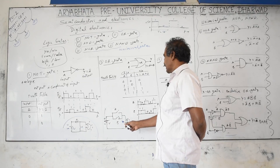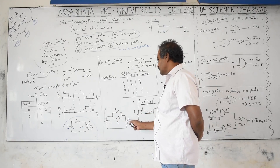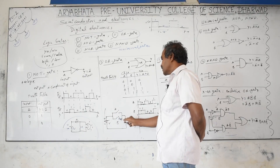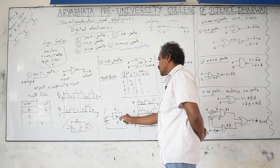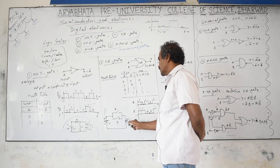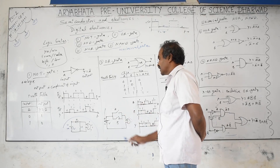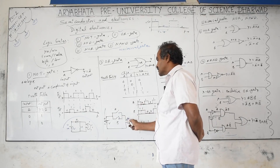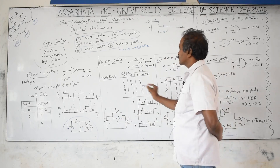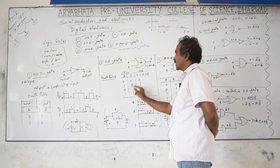The mechanical equivalent of an OR gate is two switches connected in parallel with a bulb. If either switch A or switch B is closed, current passes and the bulb glows (output = high). If both are open (0, 0), current does not pass, output is low (0). So any one of the inputs being high gives high output.